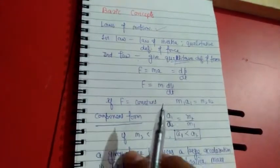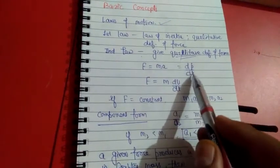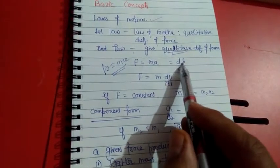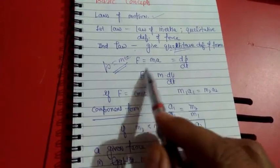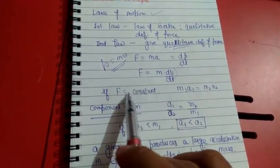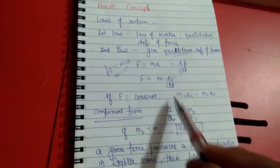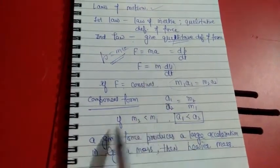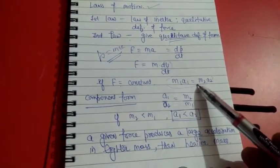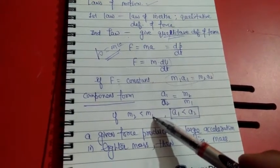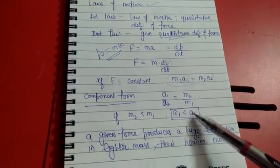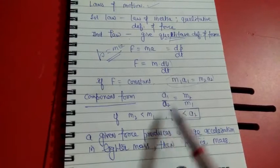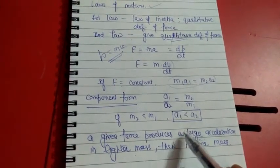From the second law, we get the force. Force acting on a body is mass times acceleration, or the rate of change of momentum. Momentum is mass times velocity (P = mv). Therefore M(dv/dt) is also a form of the second law. If force is constant, then M₁A₁ = M₂A₂, so A₁/A₂ = M₂/M₁. A given force produces larger acceleration in a lighter mass than in a heavier mass.